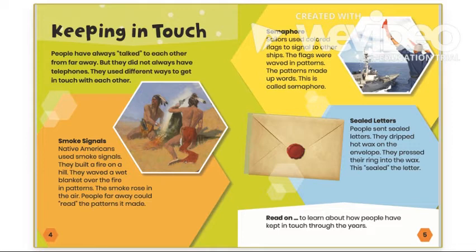Semaphore: Sailors used colored flags to signal to other ships. The flags were waved in patterns. The patterns made up words. This is called semaphore. Sealed Letters: People sent sealed letters. They dripped hot wax on the envelope. They pressed their ring into the wax. This sealed the letter.